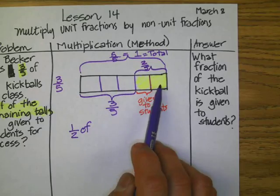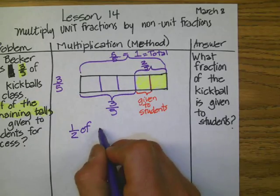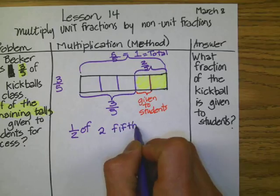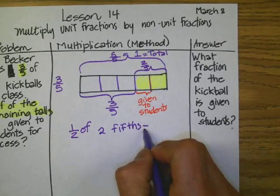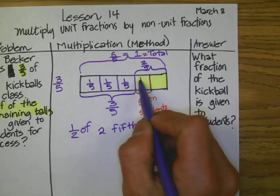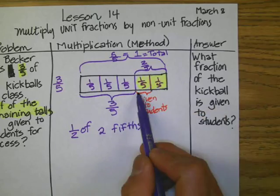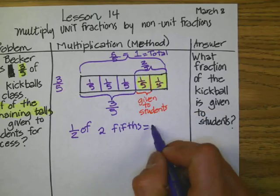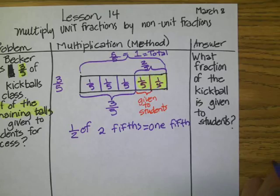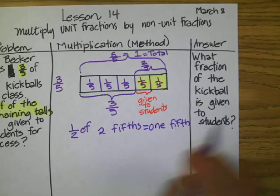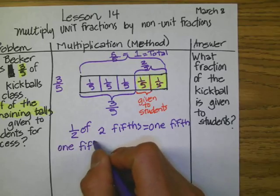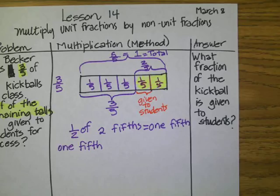Half of two-fifths. That will equal — well, if this is one-fifth, and this is one-fifth, and this is one-fifth, one-fifth, and one-fifth, but we only want to know half of it — the answer is one-fifth. We can answer the question: one-fifth. Let me shade the area in a different color so you can see it. So this is the one-fifth, my friends.